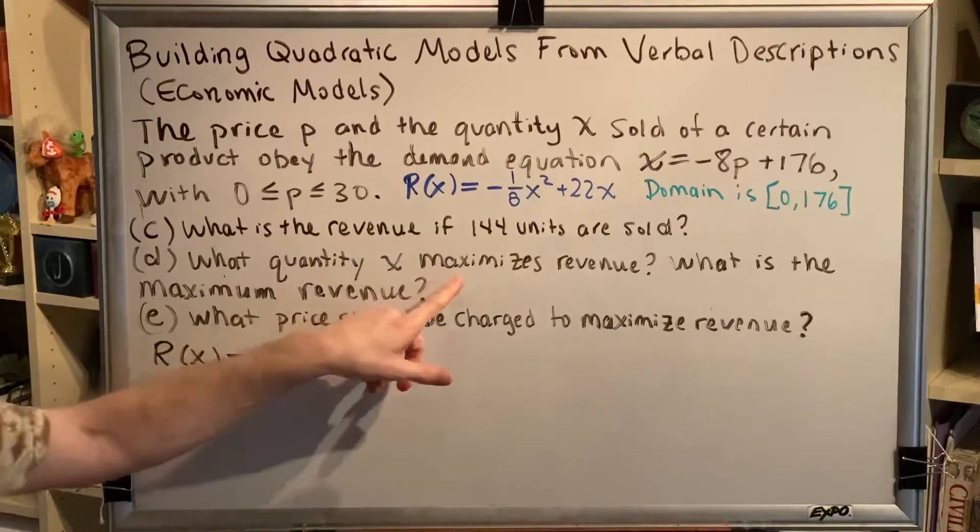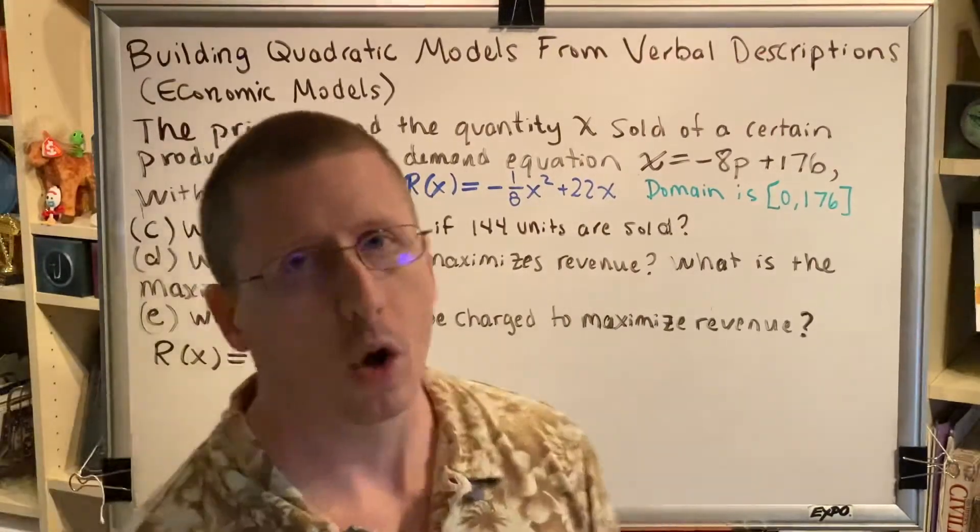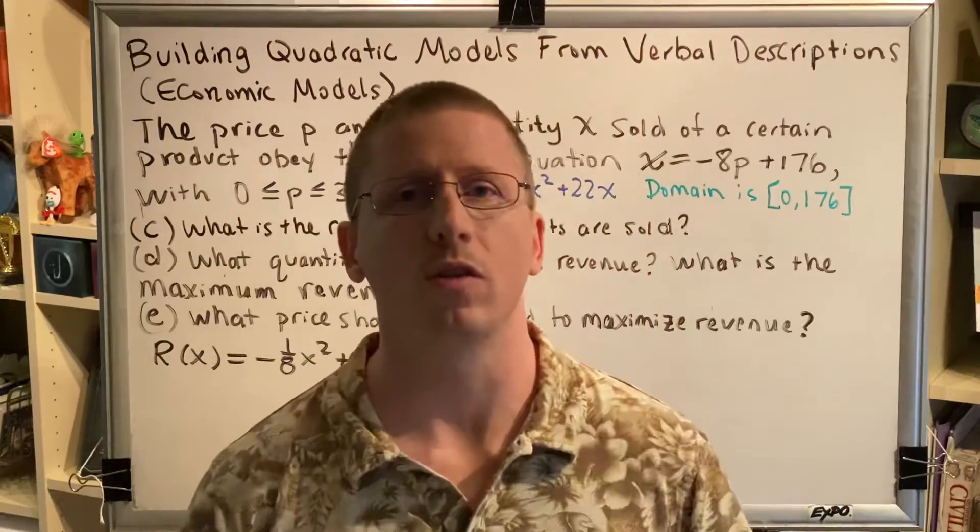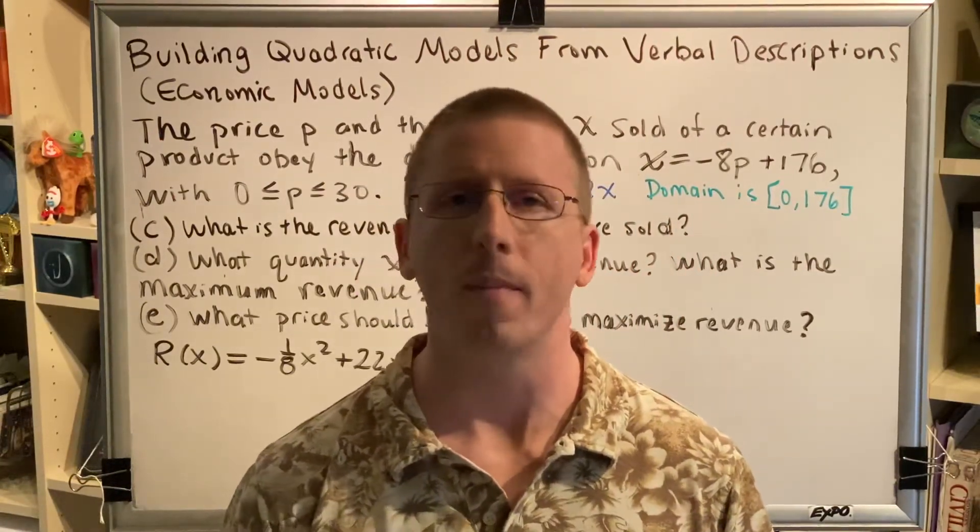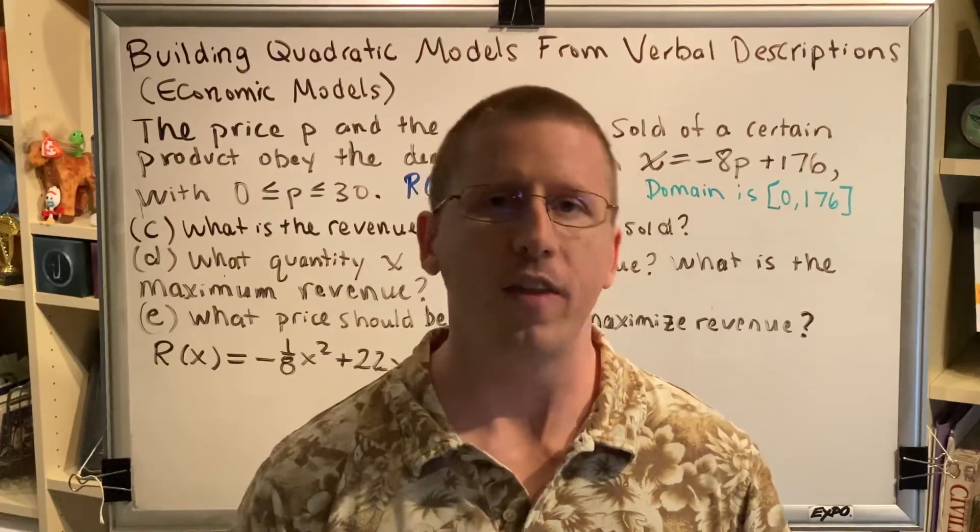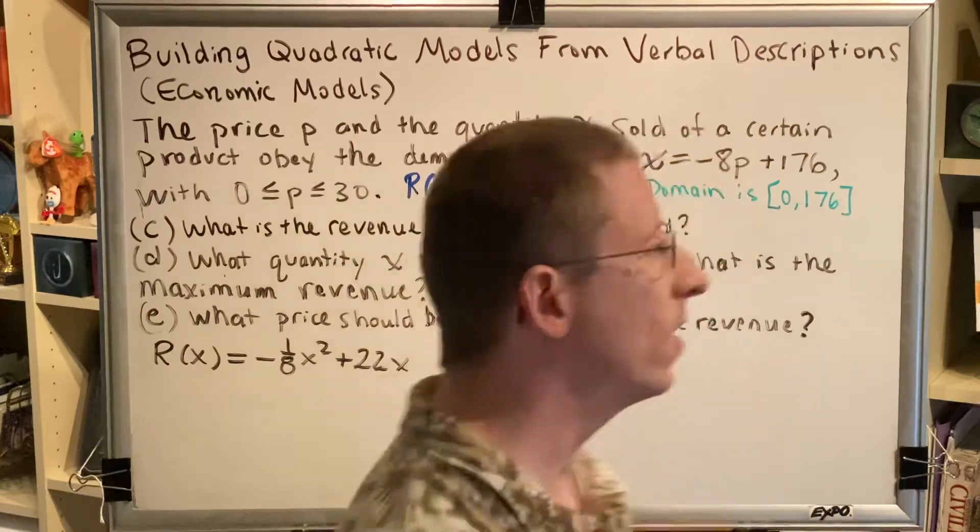R of X equals negative 1/8 X squared plus 22X. The problem uses an extreme word like maximizes and maximum. So, your job as an algebra student is to recognize that when you see an extreme word like smallest, largest, minimum, maximum,